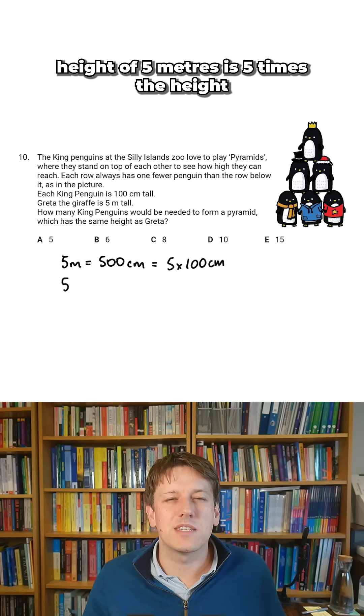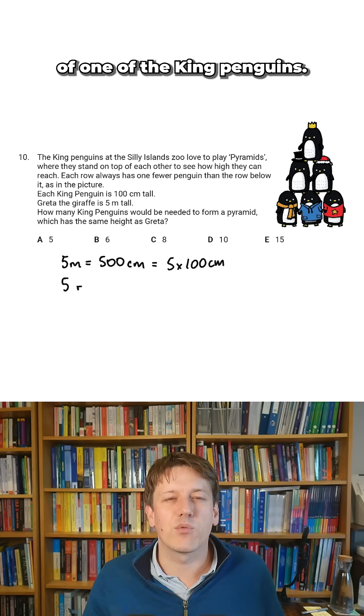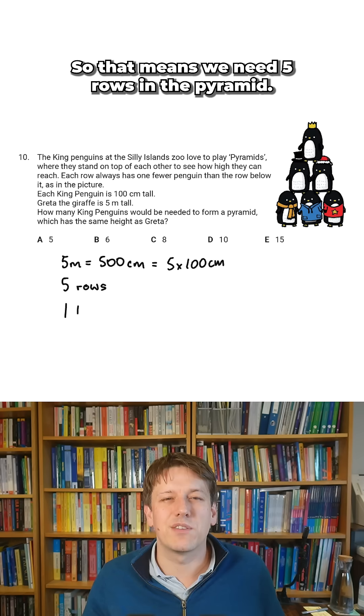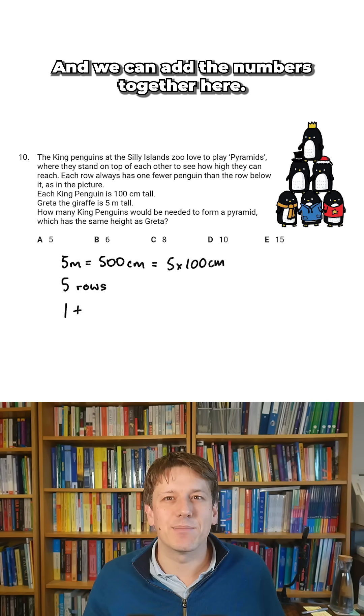So Greta's height of 5 meters is 5 times the height of one of the king penguins. So that means we need 5 rows in the pyramid, and we can add the numbers together here.